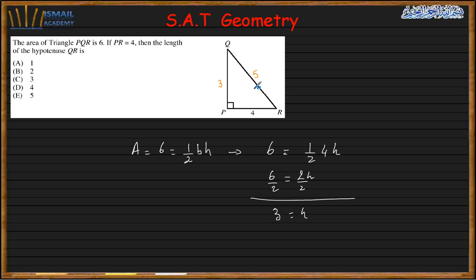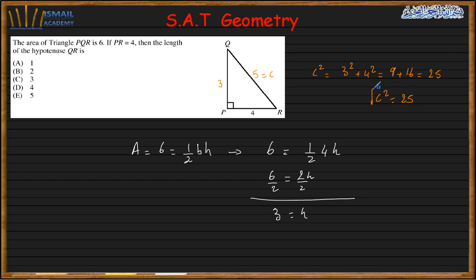This side should be 4 and the hypotenuse should be 5. If you don't recognize the 3-4-5 triangle, you can verify using the Pythagorean theorem: C² = 3² + 4² = 9 + 16 = 25, so C = 5. The answer is D.